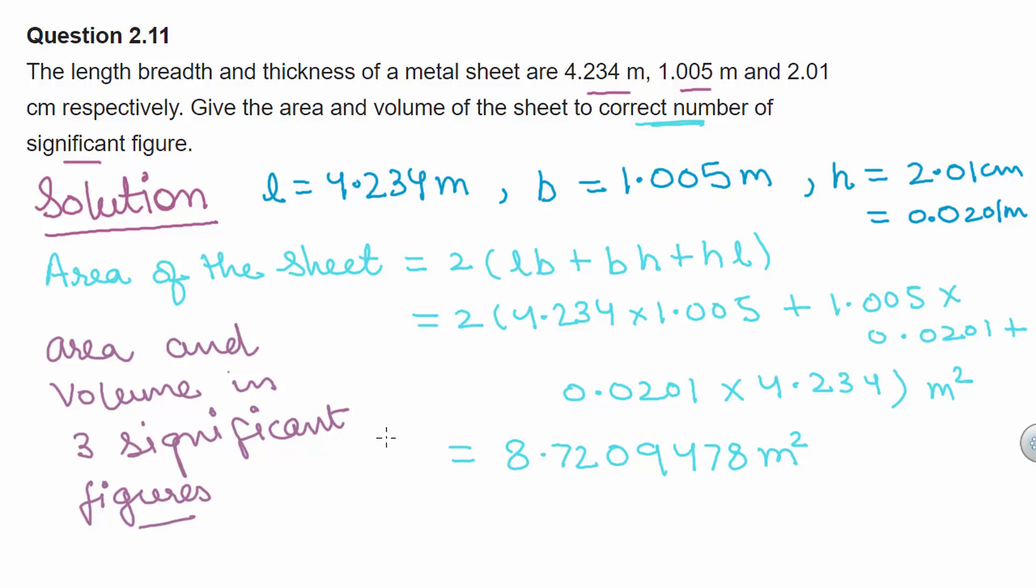So in case of area of sheet, our final answer up to three significant figures would be equal to 8.72 m whole square which is obtained by rounding off up to three significant figures.